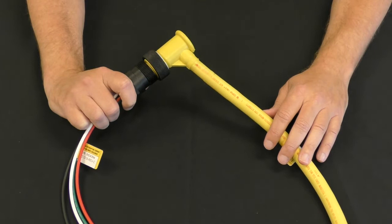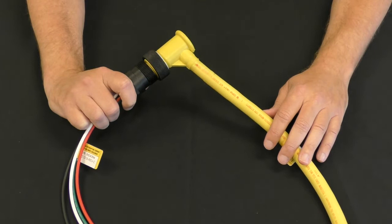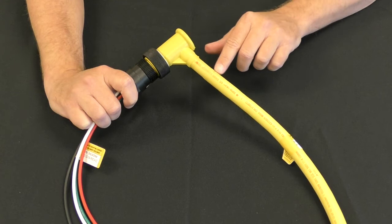A huge advantage of our mini quick connects is that they come with TPC's Supertrex cable. Supertrex cables are engineered to withstand flexing, impact, abrasion, chemicals, and extreme temperatures, unlike the other commodity cables on the market.